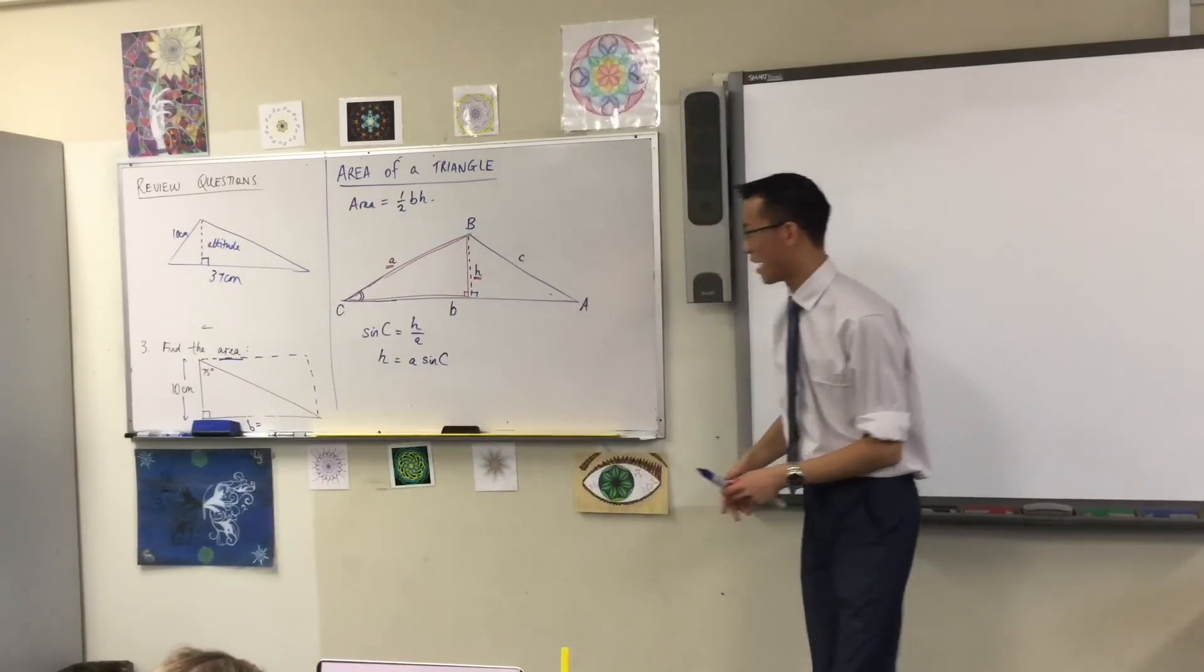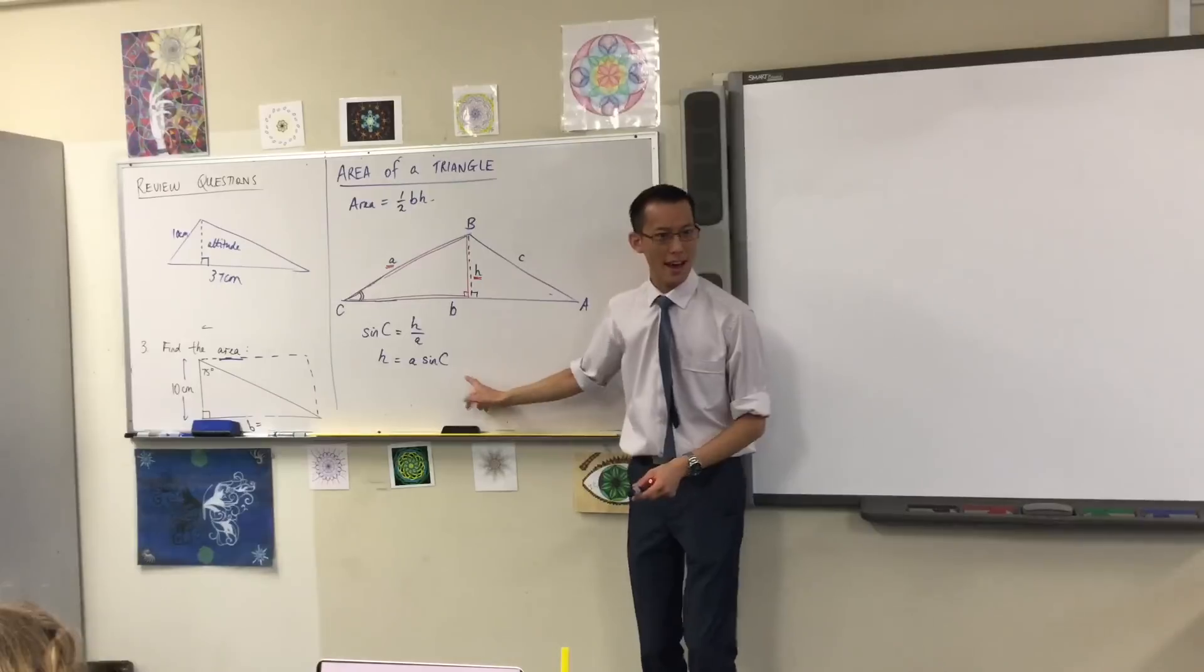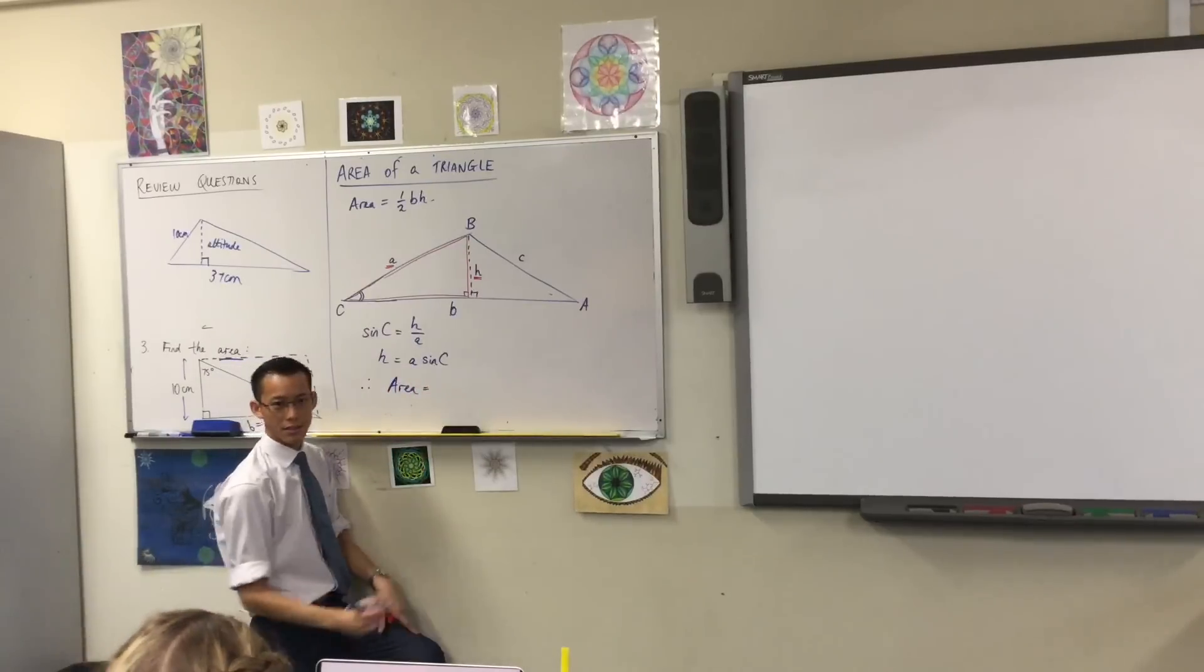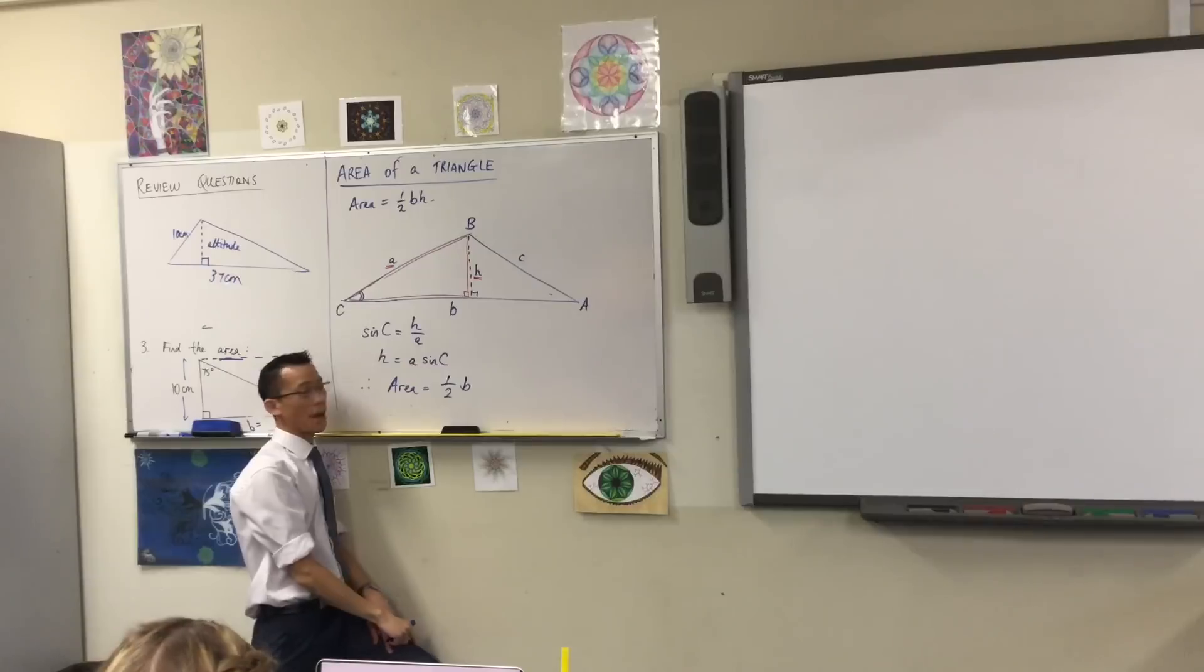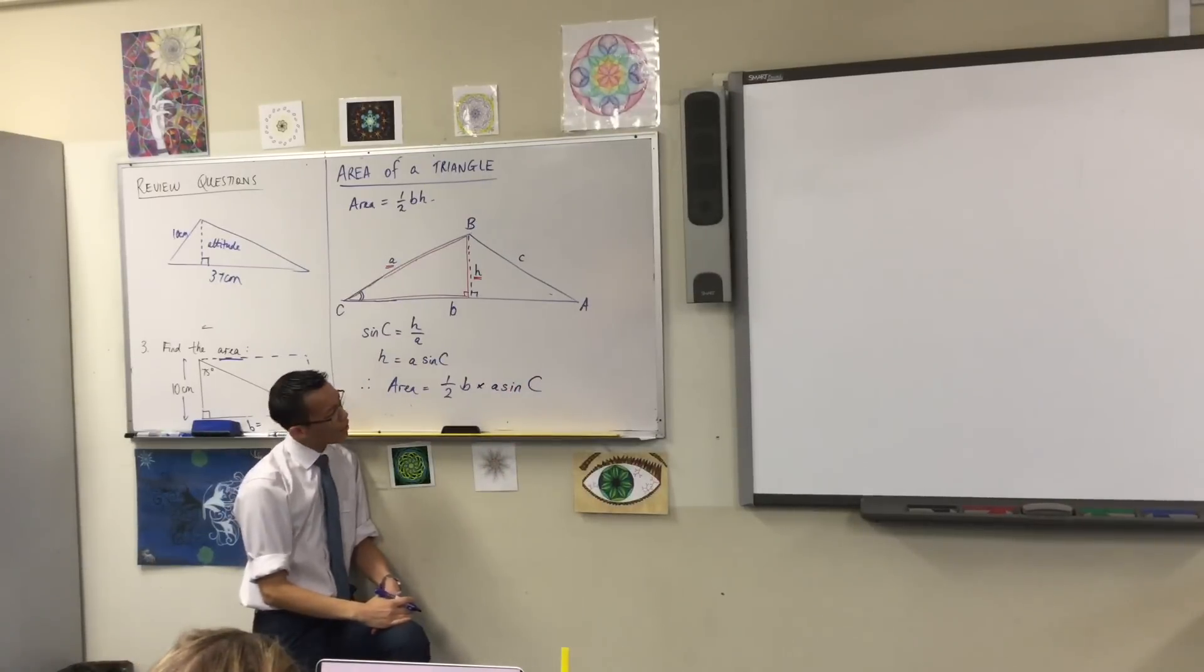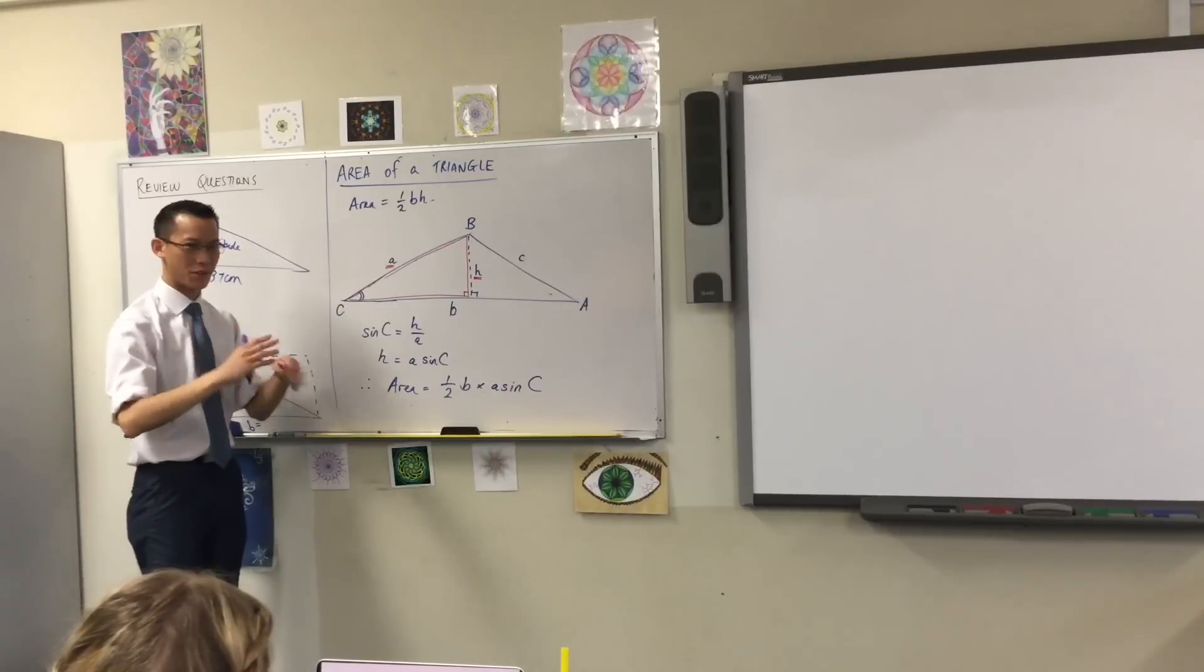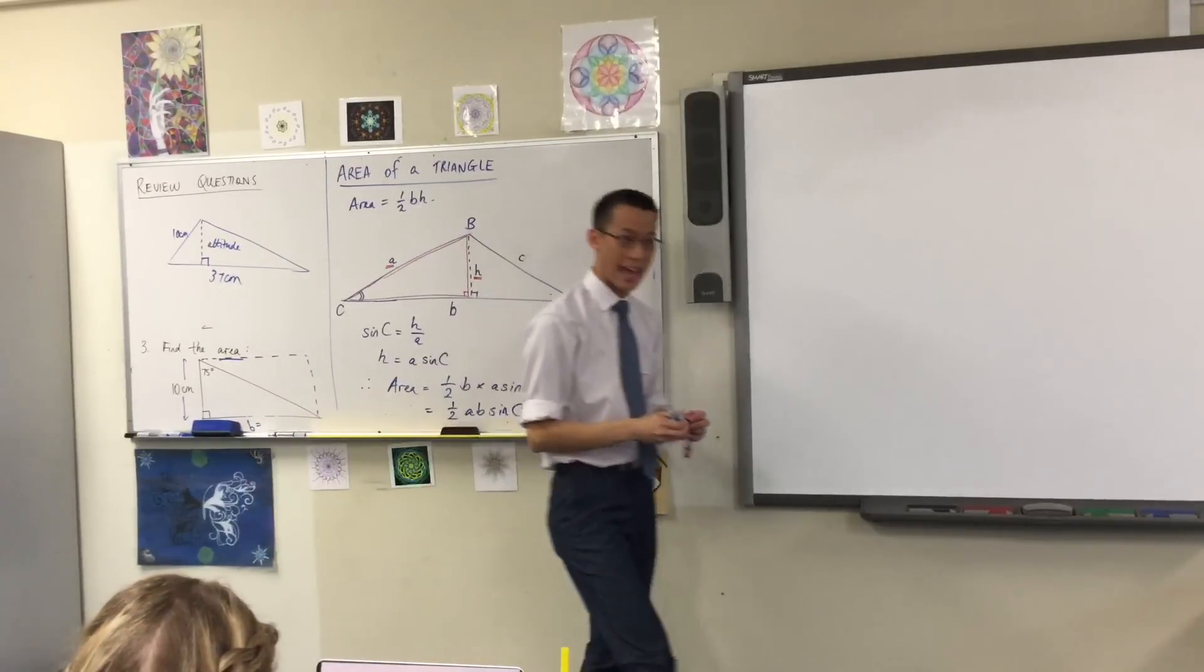So H is A times sine C. Okay? Now these are all letters at the moment, because I don't know what any of these are, but I can punch in the numbers as soon as I know them for a specific triangle. Okay, I'm almost there. Now I know what the height is. So therefore I can come back to my original way of using the area of a triangle. So if H is this, therefore the area is half times the base, which is still B down the bottom here, times the height. Well, this is the height, right?